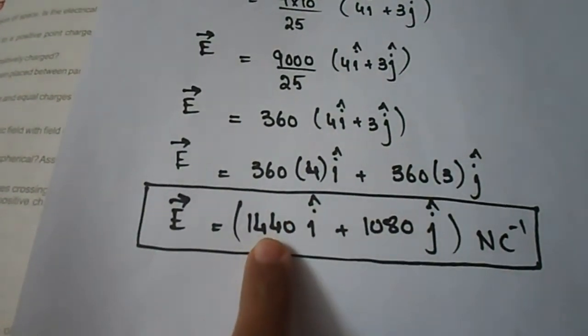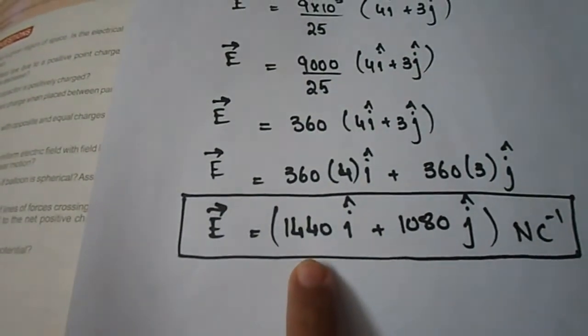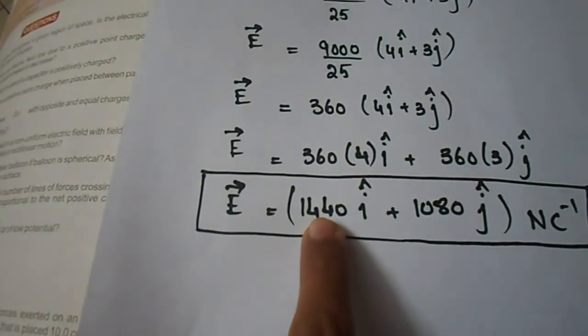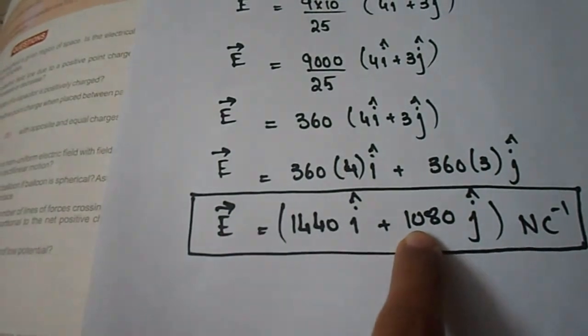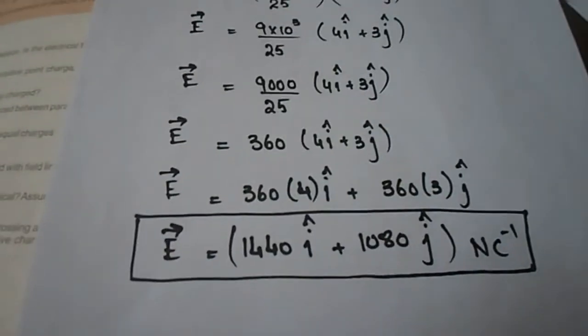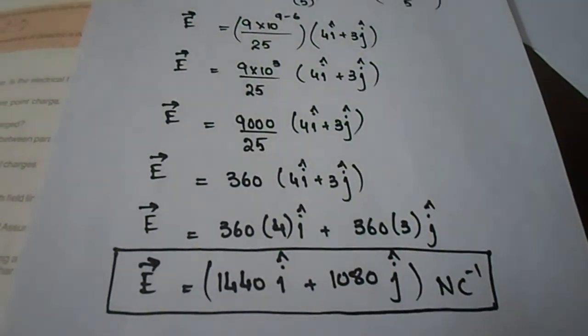When we multiply we have the final answer: electric field intensity at the point r is 1440 i hat plus 1080 j hat, and its units are newtons per coulomb. That's all for this numerical, thank you very much.